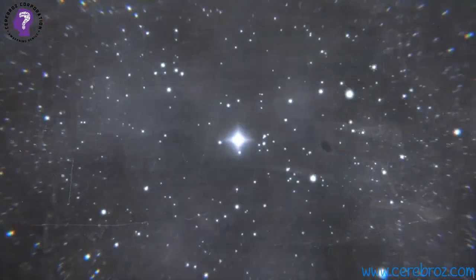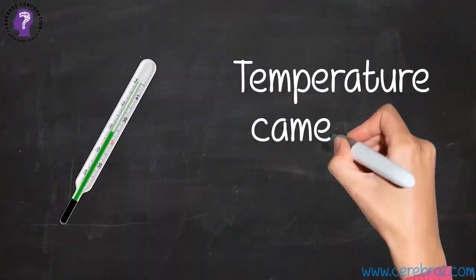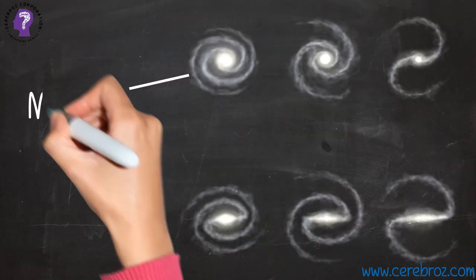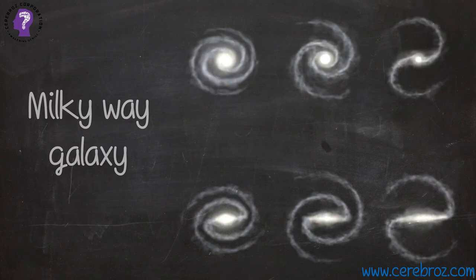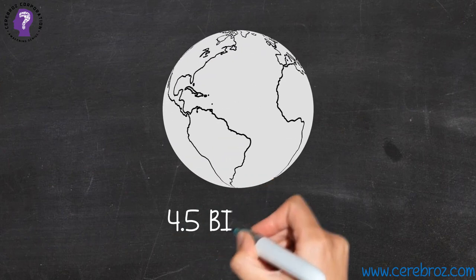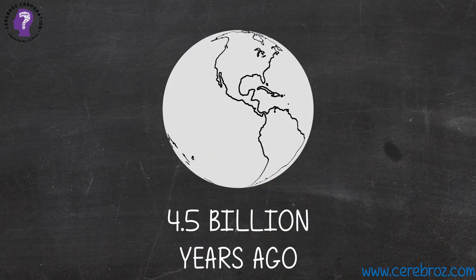With the Big Bang, the universe expanded and temperature came down. Gravity condensed gases and formed galaxies. Earth evolved around 4.5 billion years ago in the Milky Way galaxy.